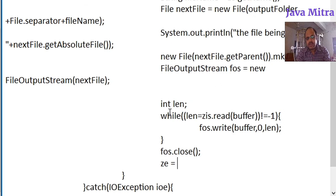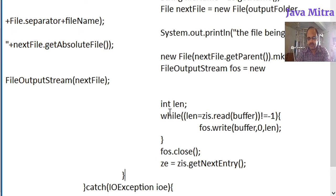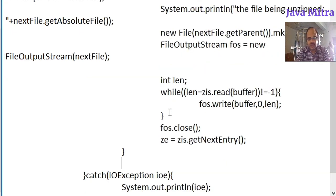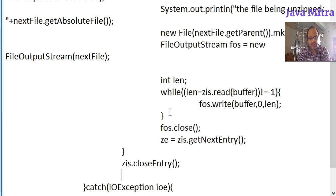When the content is written to the FileOutputStream object, we close the fos object, then go to the next entry — the next file to be unzipped in the target folder. When the while loop finishes, that means we have unzipped all the folders and files. We then close the input stream: first close the entry and then close the ZipInputStream object.